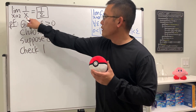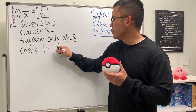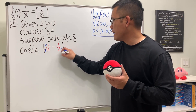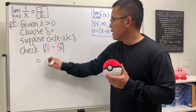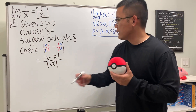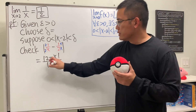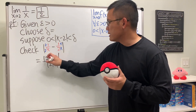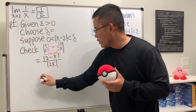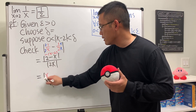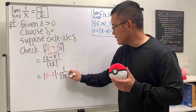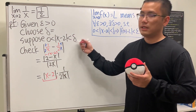We check absolute value of 1 over x minus 1 over 2. We do algebra: multiply top and bottom to get a common denominator, so the numerator becomes 2 minus x and the denominator becomes absolute value of 2x. We factor out a negative from 2 minus x to get absolute value of x minus 2, then rewrite as absolute value of x minus 2 times 1 over the absolute value of 2x, which equals 1 over 2 times absolute value of x.